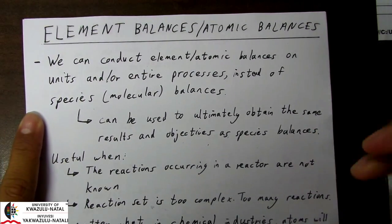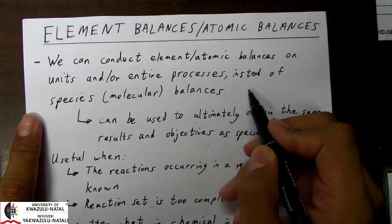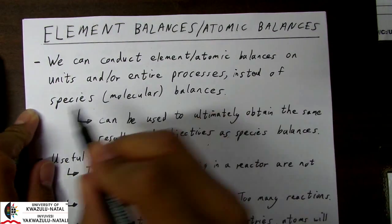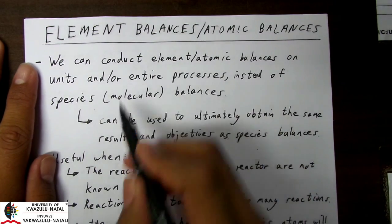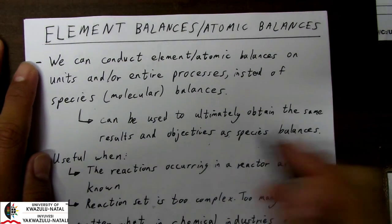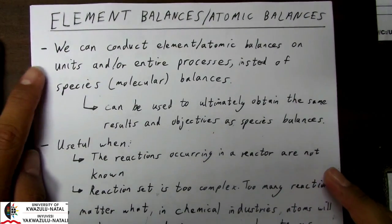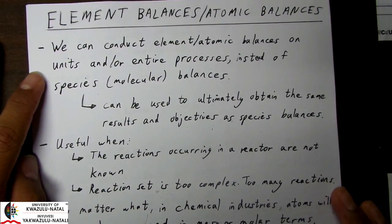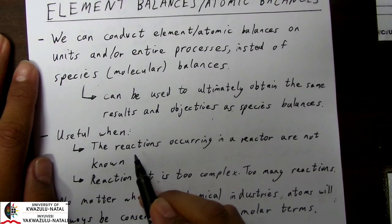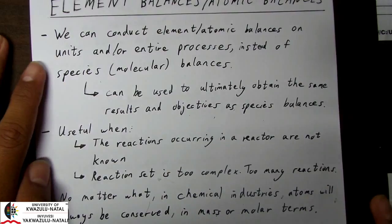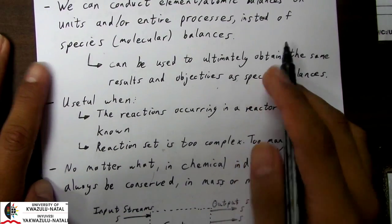We can conduct element or atomic balances on units and/or entire processes instead of conducting species balances. So instead of looking at species across a reactor or a separation unit, we can look at each individual element in those different species and do a balance. This can be used to ultimately obtain the same results and objectives as species balances.